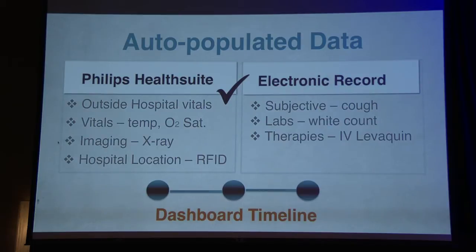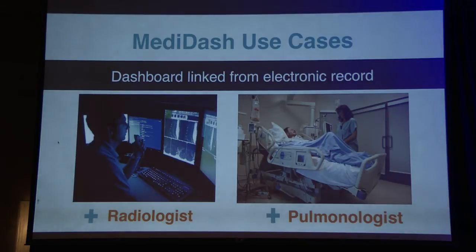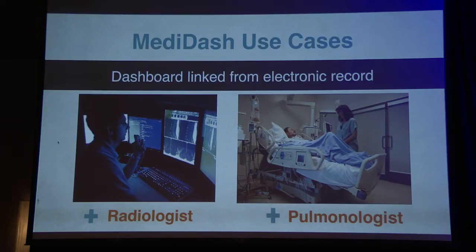Imagine a dashboard timeline that starts exactly when the patient arrives at the hospital. It's auto-populated with data from the health suite, including vitals and imaging data, as well as information from the electronic record such as labs and therapies. This dashboard is like an overlay on top of the electronic record — the doctor clicks over from the record, and the radiologist reading the x-ray immediately has the patient's temperature, white count, and other data at their fingertips. Real-time information is also pushed to the bedside doctor, and the pulmonologist can aggregate all that information to make a better decision on what to do next.